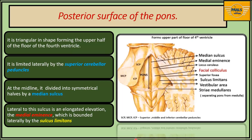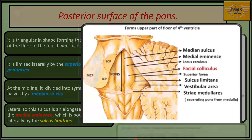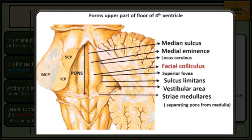This is the posterior view of the pons. In this view we will see the upper half of the fourth ventricle. This triangular part forms the upper half of the fourth ventricle, and it is limited on either side by the superior cerebellar peduncle.